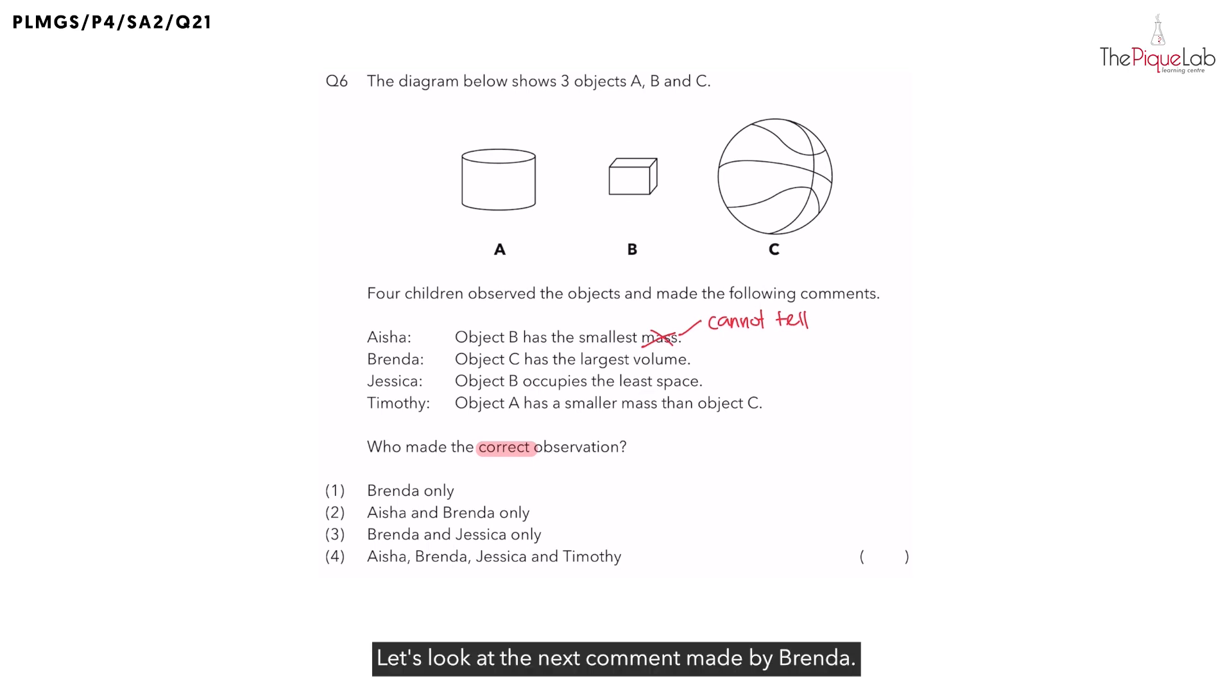Let's look at the next comment made by Brenda. Brenda observed that object C has the largest volume. Volume is the amount of space an object occupies. So if object C has the largest volume, this would mean that object C would occupy the most space.